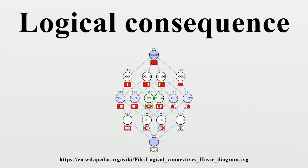Semantic consequence. A formula is a semantic consequence within some formal system of a set of statements if and only if there is no model in which all members of the set are true and the formula is false. Or, in other words, the set of the interpretations that make all members of the set true is a subset of the set of the interpretations that make the formula true.